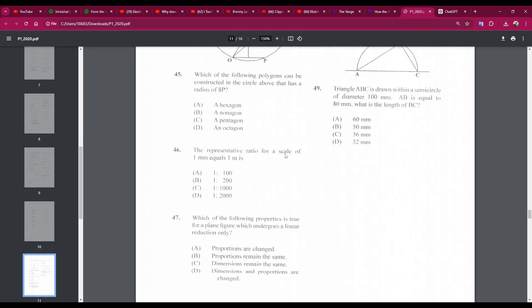Number 46: the representative ratio for a scale of 1 millimeter equals 1 meter is? Okay, so there are 1,000 millimeters in 1 meter. So the ratio would have to be 1 to 1,000. That's C. So 45D, 46C.